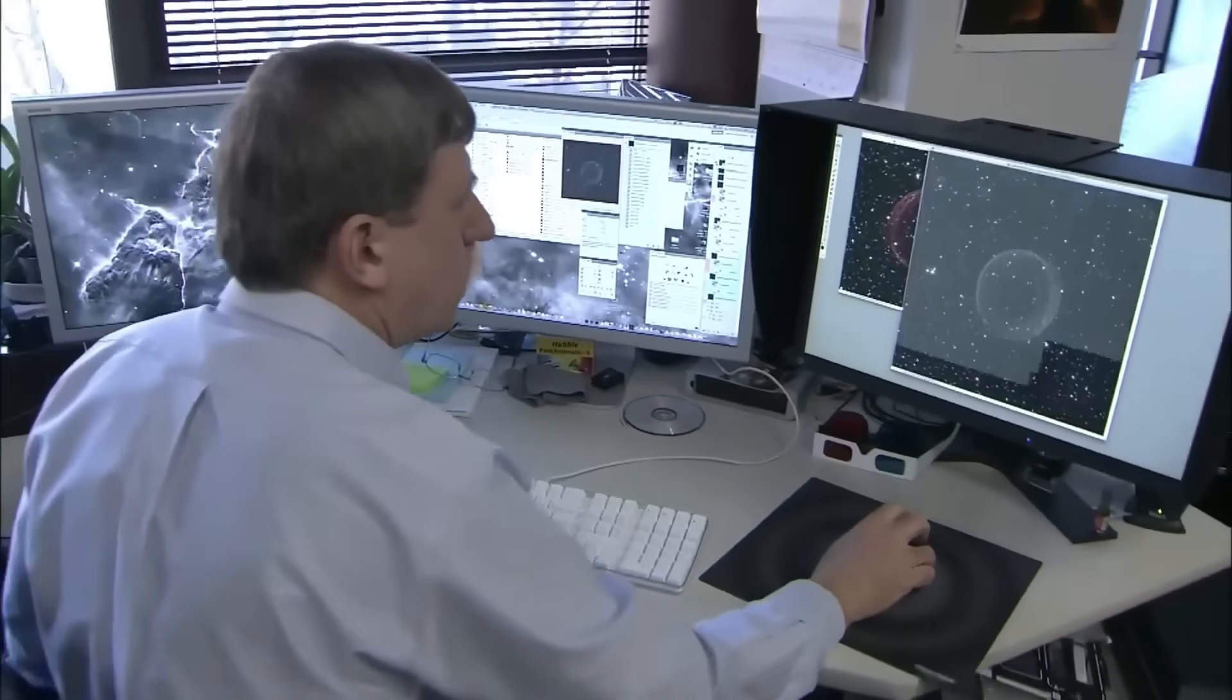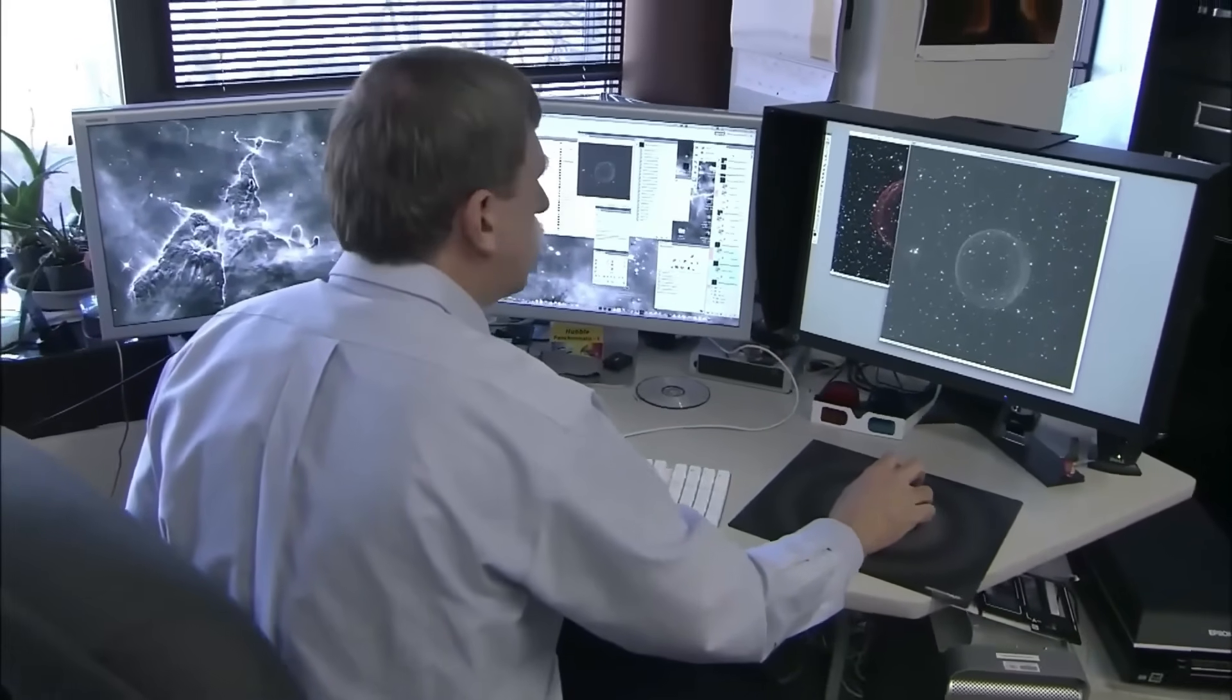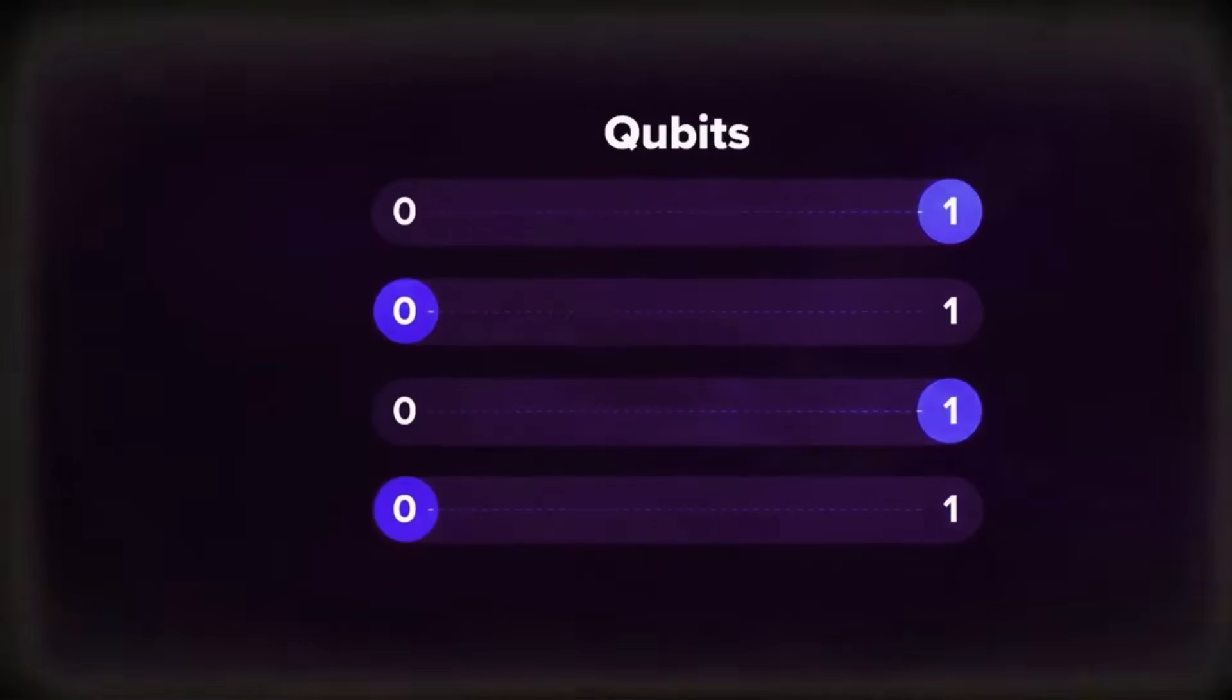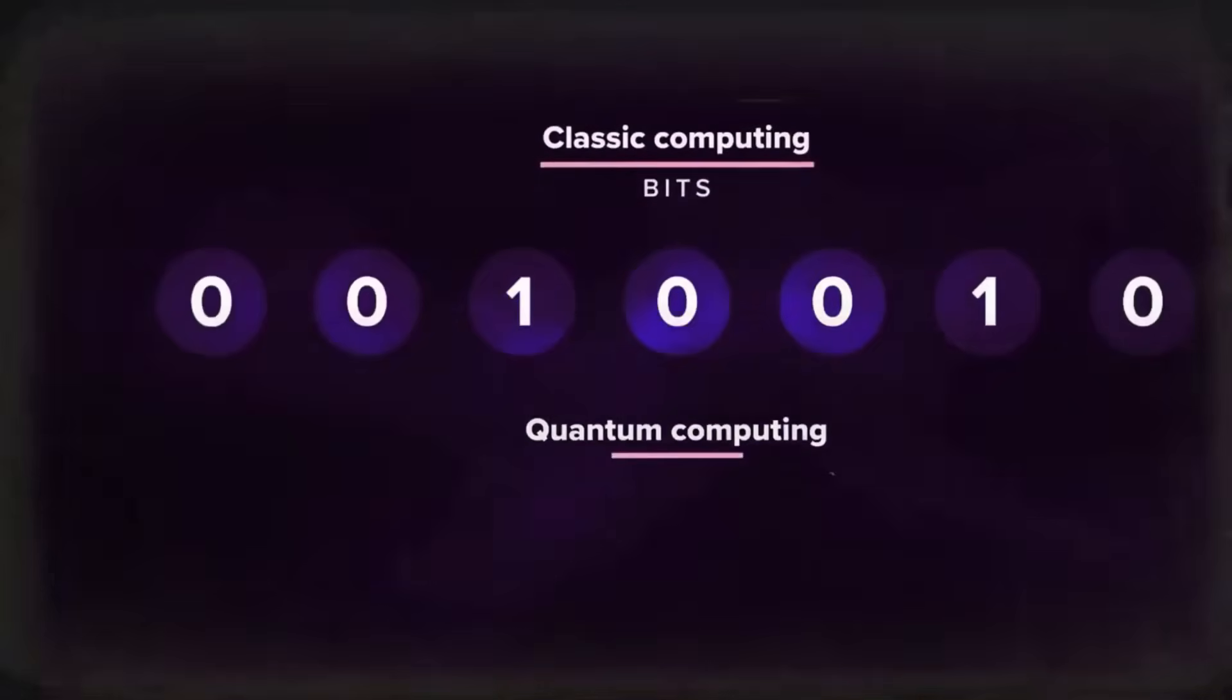Whatever the truth, one thing became clear. This wasn't a glitch. The observer wasn't a bug. It was a threshold, where the machine stopped calculating and started reflecting.